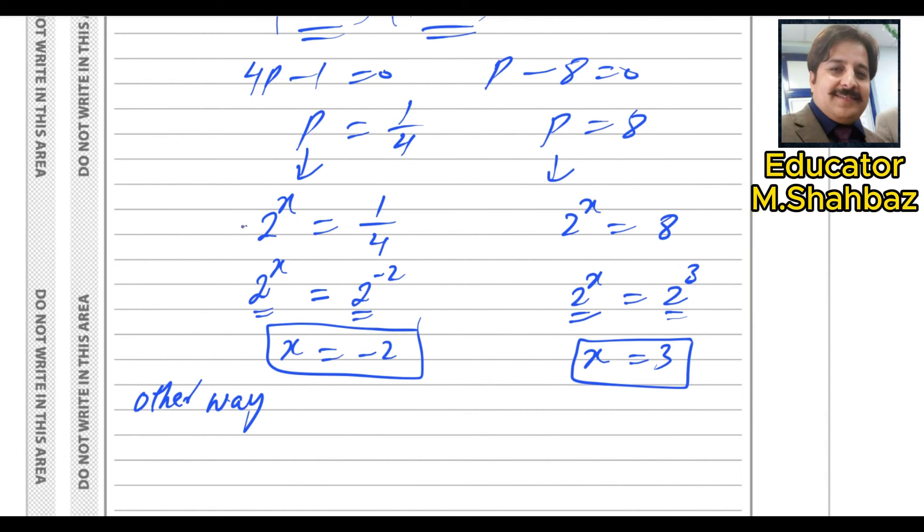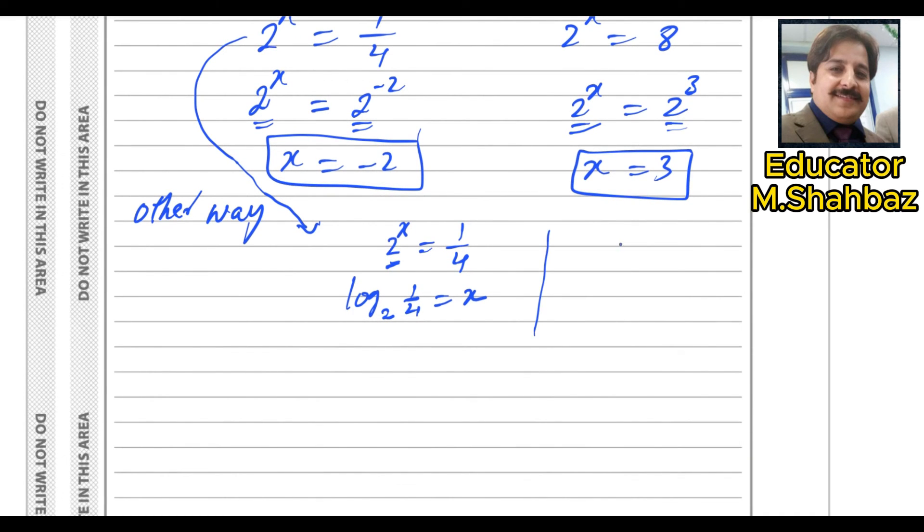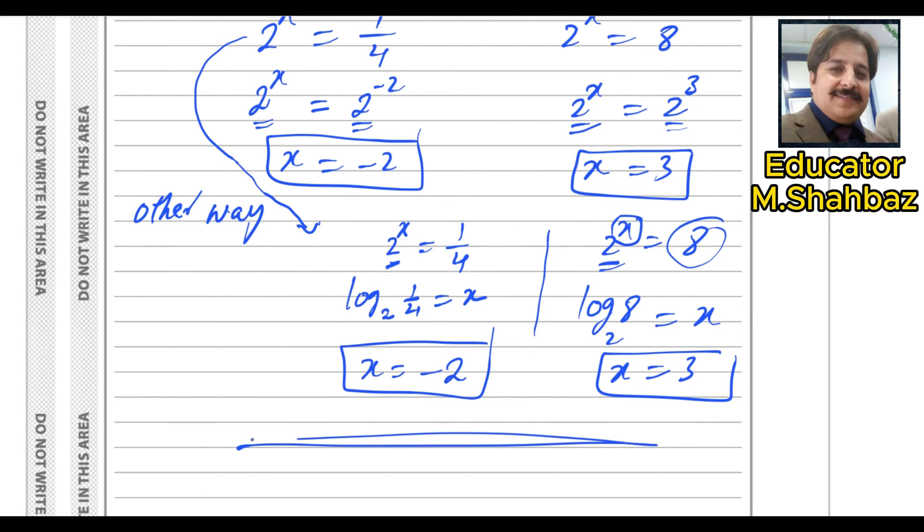What could be the other way? From here, you can take the logarithm. We can write like this, 1 over 4. And you know that this becomes the base of the log. Log base 2, 1 over 4 equals to x. And same way, this one is 2 power x equals to 8. And you know that we change these two. And this becomes the base of log. So log 8 base 2 equals to x. If you solve and use calculator, calculator will give you the answer minus 2. And here calculator will give you the answer 3. So this is the other way. If you don't know how to make the same bases, you can use the logarithm in this method. That's all about this question. Question number 4.